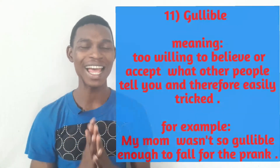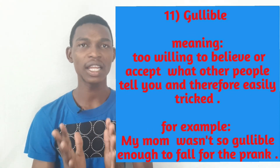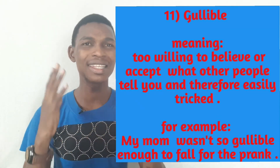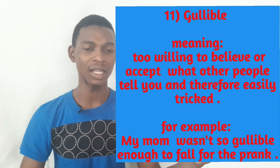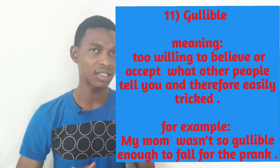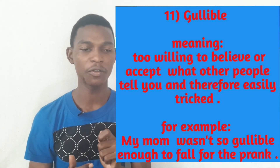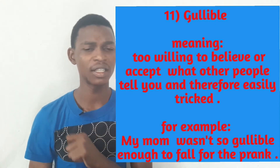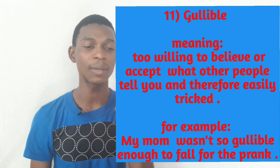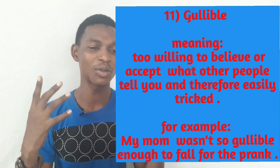Number eleven, before the last one, is gullible. Gullible means too willing to believe or accept what other people tell you, and easily tricked. If someone is gullible, it means this person is too willing to believe or accept what other people tell him, or this person is easily tricked. For example, my mom wasn't so gullible enough to fall for the prank — she wasn't too willing to believe or accept what she was told.